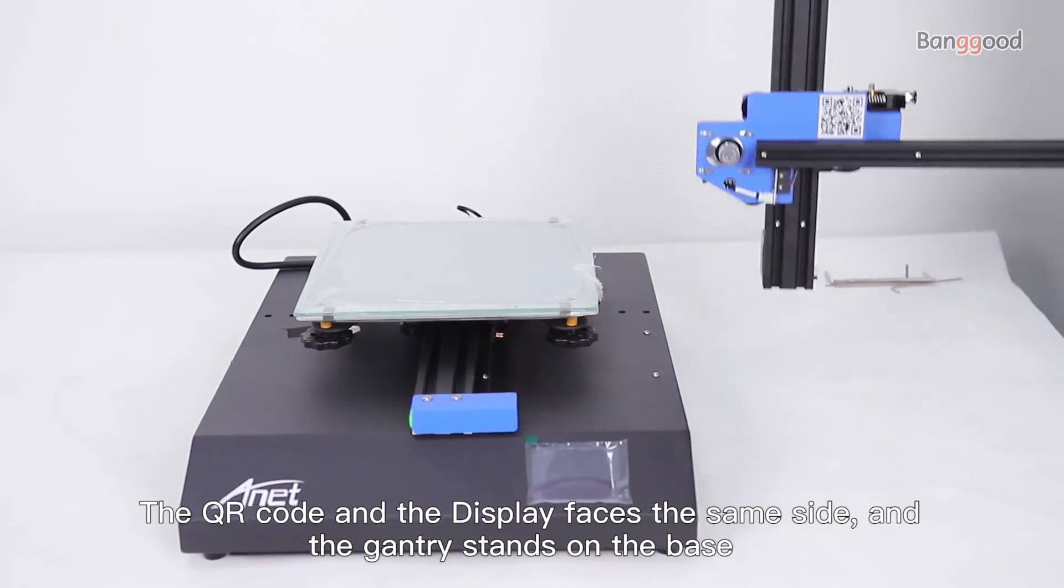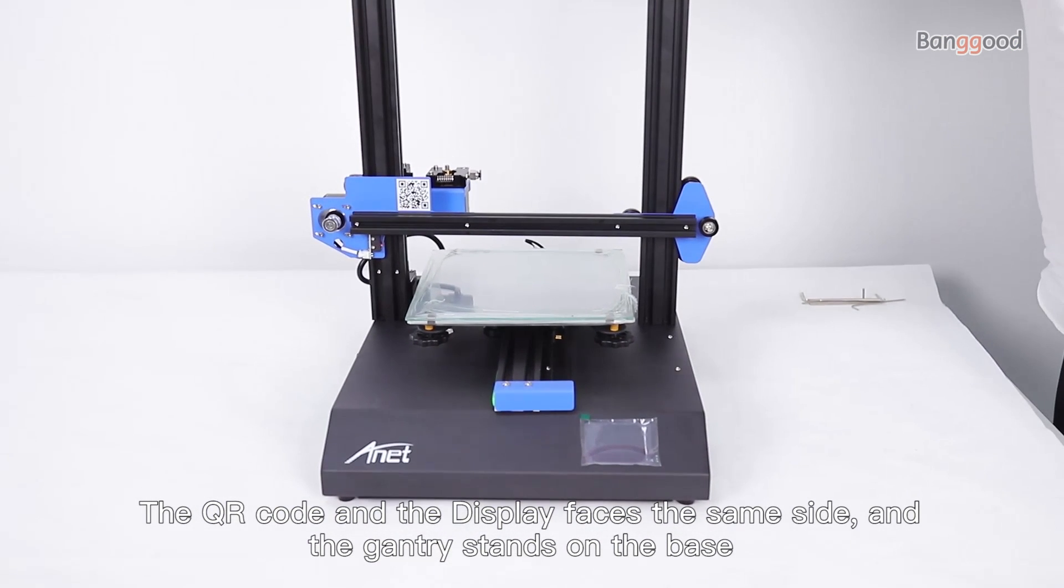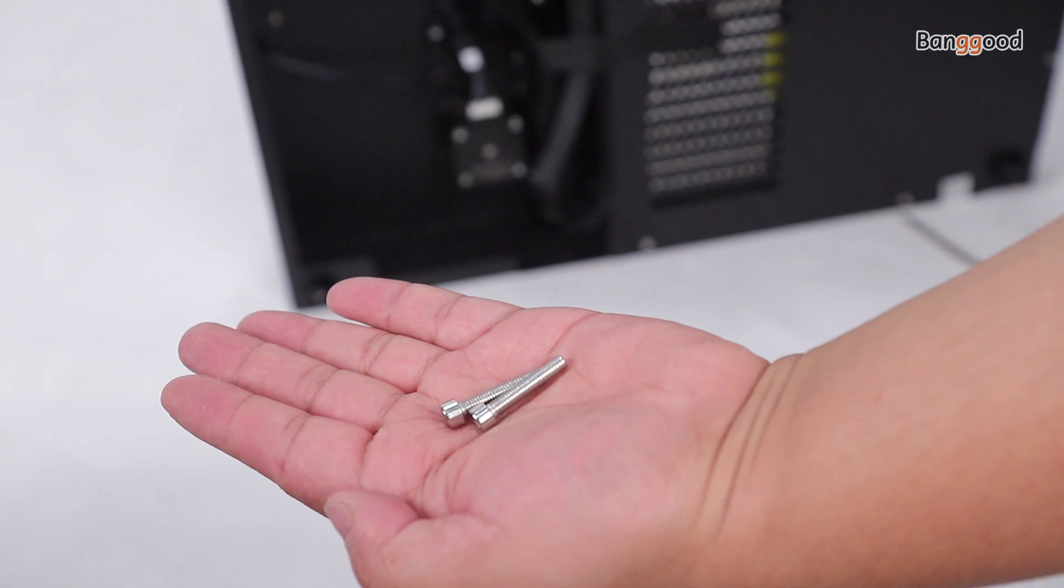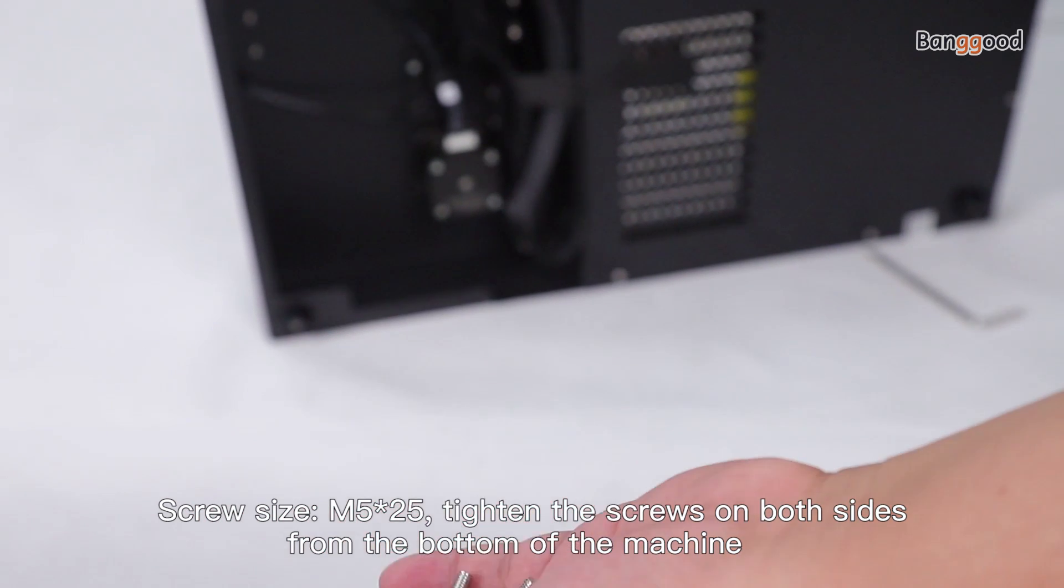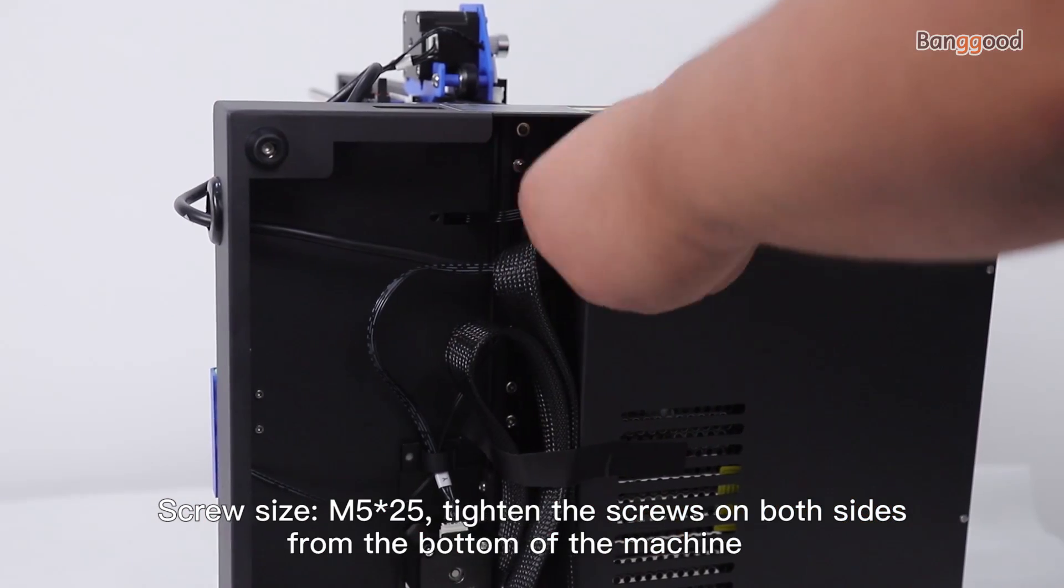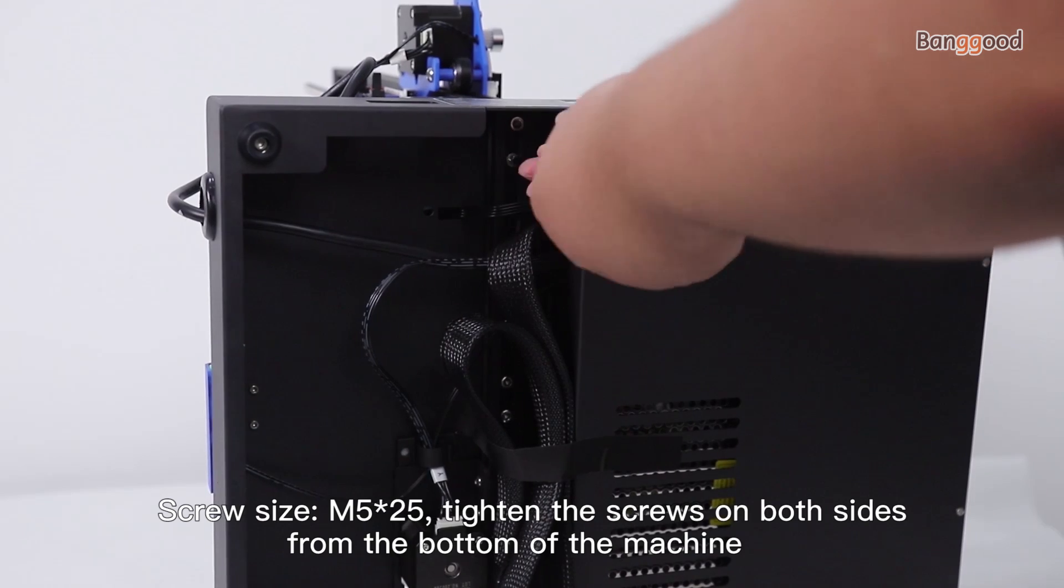The QR code and the display face the same side, and the gantry stands on the base. Screw size M525. Tighten the screws on both sides from the bottom of the machine.